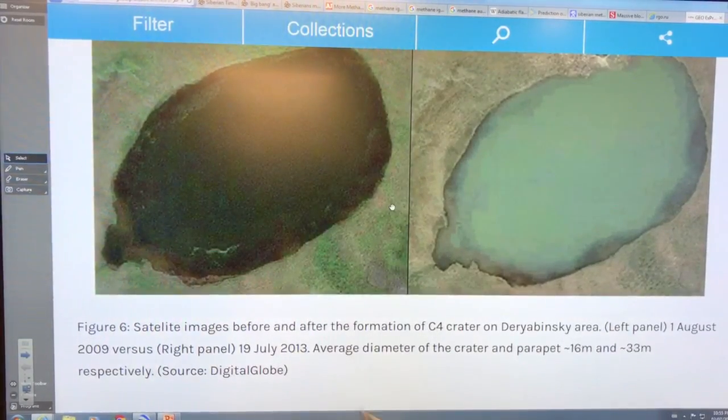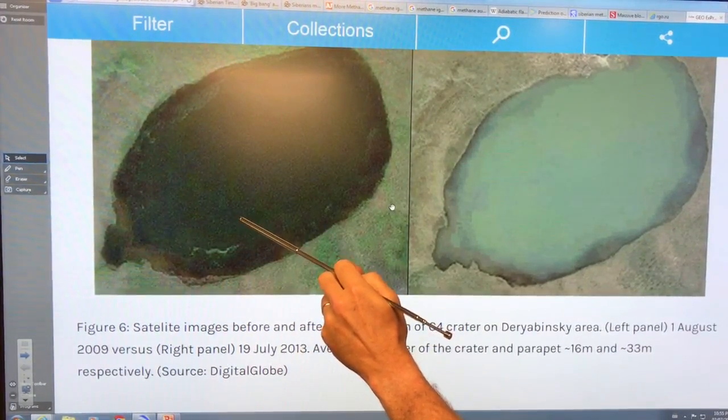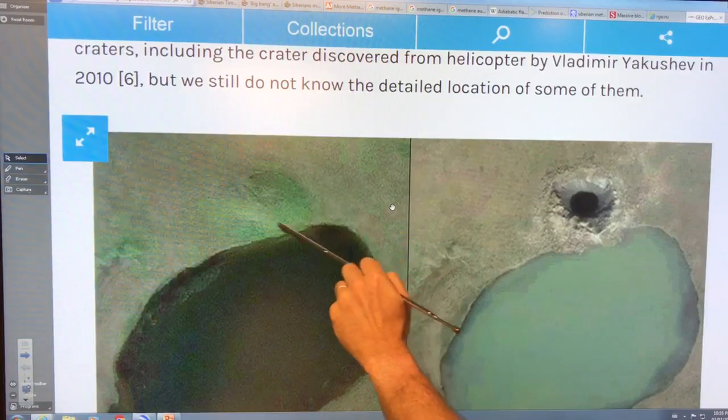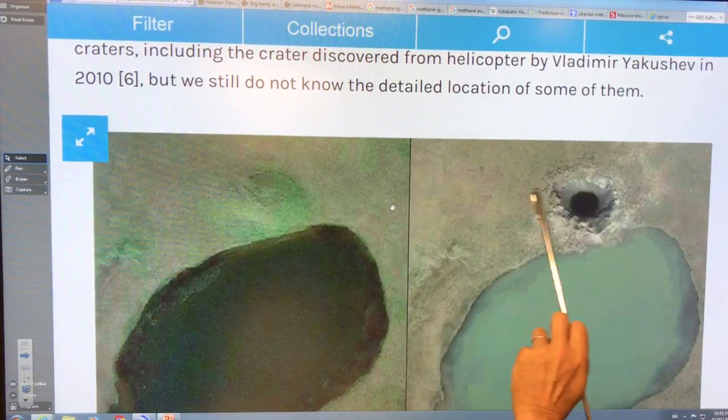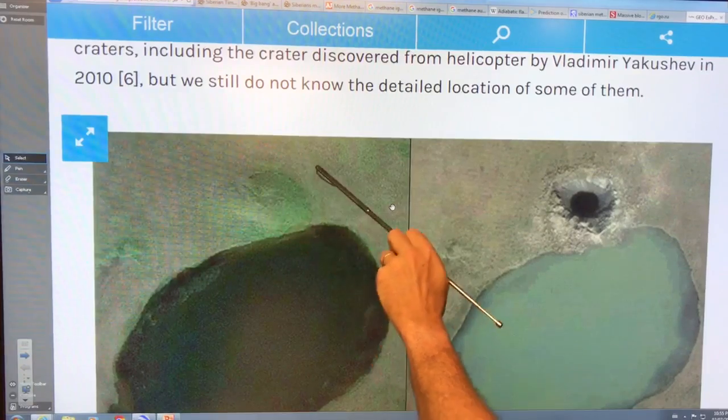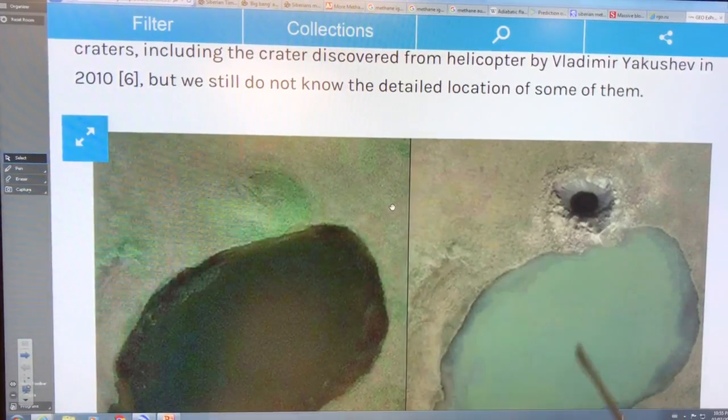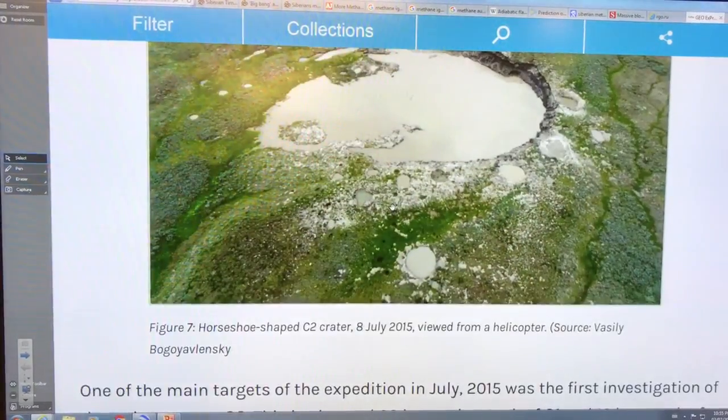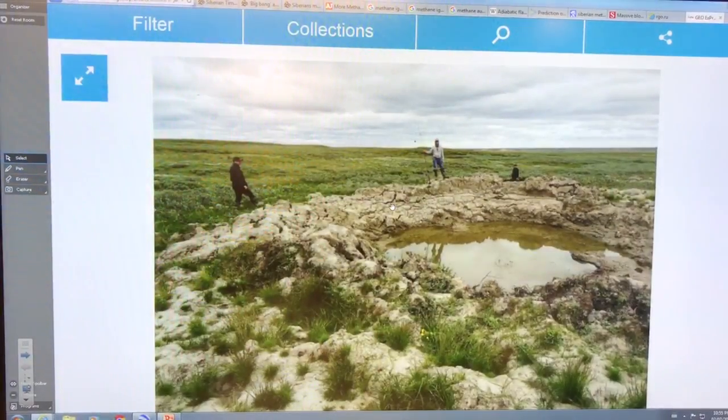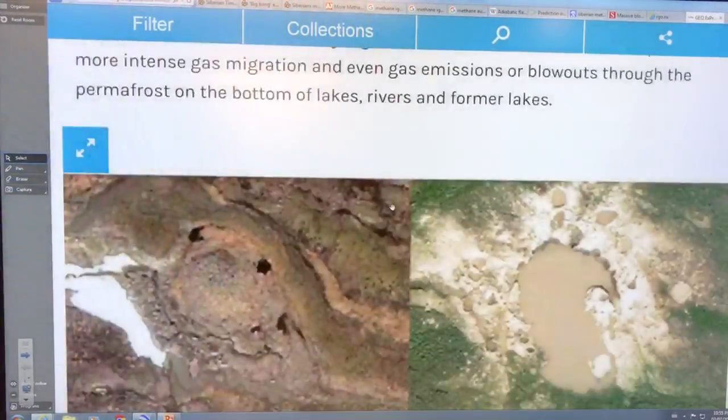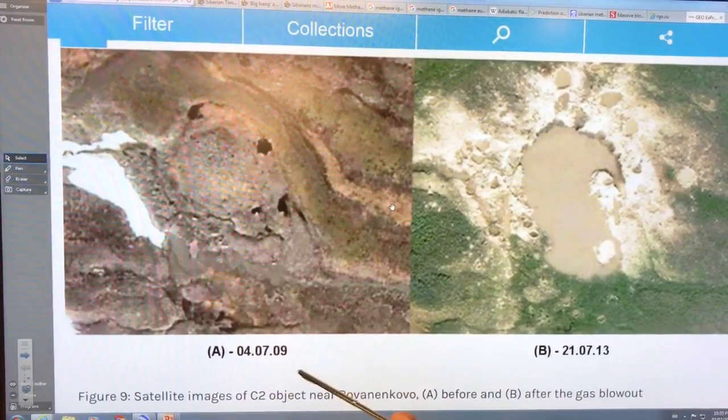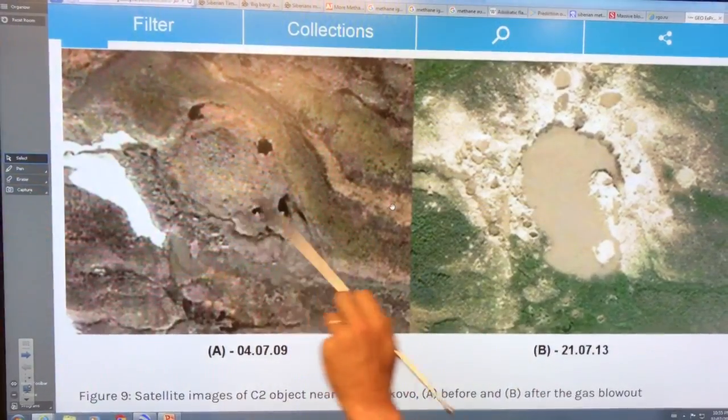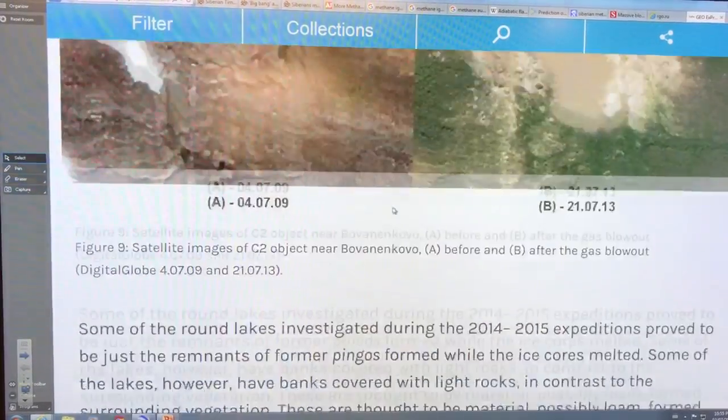So this is before and after. This is August 1st, 2009. July 19th, 2013. So here we go. You can see some sort of feature here. This is probably the ground being elevated outwards. The drainage is different. So the vegetation is growing differently here. And then you can see the blowhole there. Here's another one. These things fill with water fairly quickly. Here's a smaller guy. So this is July 4th, 2009. July 21st, 2013. So you can see this whole thing has been blown out here. Before and after.